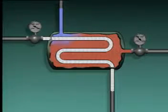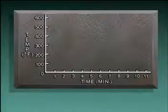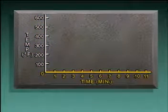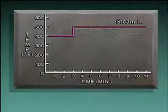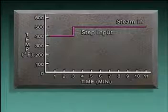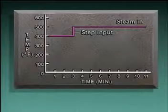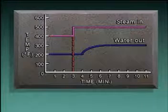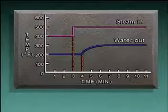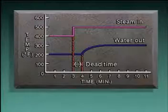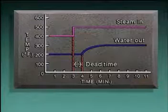It's easier to see why the water temperature changes this way by plotting the temperature changes on a graph. The vertical axis represents temperature and the horizontal axis represents time. When we plot the steam temperature, we see the sudden increase from 400 degrees to 500 degrees. This type of disturbance is commonly called a step input. When we plot the water temperature, we see that there's a delay between when the steam temperature increased and when the water temperature first started to rise. This delay is called dead time.